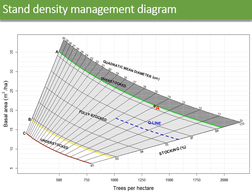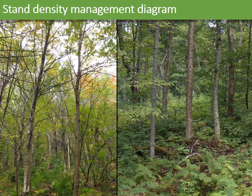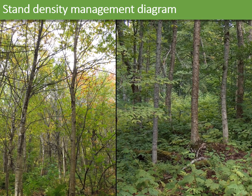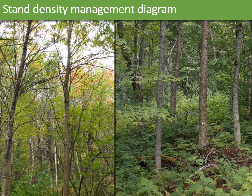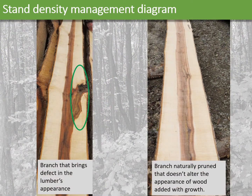Point A is the initial stand condition that can be thinned to point B, the quality line. We want to stop at the quality line because we want to maintain a certain density to favor natural pruning. Opening the stand too much when having small diameter trees will favor growth of lower branches, resulting in an abundance of knots in the lumber subsequently produced. When keeping the density at a certain level, crop trees will naturally prune the lower branches and have a 5-metre long clear bole for quality saw logs.